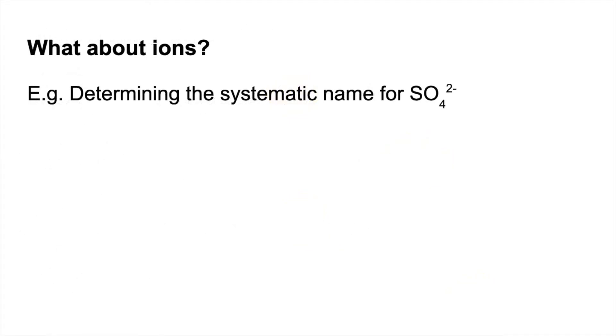So in the next part of the video, I'm just going to move on to ions. The process is exactly the same, we just need to be left with the charge at the end. So the worked example is this one here. Determine the systematic name for this ion, SO4 two minus.